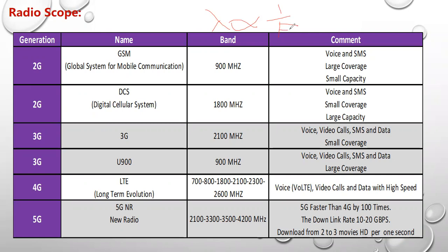If the wavelength increases, the frequency decreases. If the frequency increases, the wavelength decreases. So why does 900 MHz GSM give large coverage? Because it is a small frequency. A small frequency gives a large coverage.